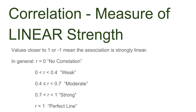Last time we talked about correlation being a measure of linear strength. In my last video, I noted that correlation and association are two different things. So we're looking at the correlation measurement as a measure of linear strength. To recap, values closer to 1 or negative 1 mean that the association is strongly linear. Let's talk about how you would know the strength based on your correlation coefficient R.